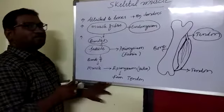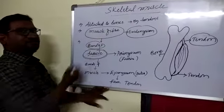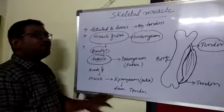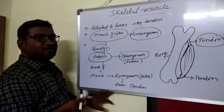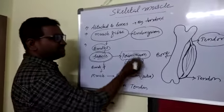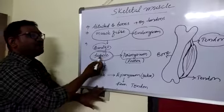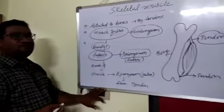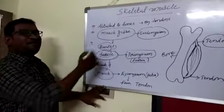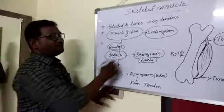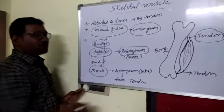The bundle of muscle fibers is called a fascicle. This fascicle is covered by another connective tissue sheet called perimysium. All the fascicles then unite together to form a bundle that is called the muscle. So the muscle is the bundle of fascicles.